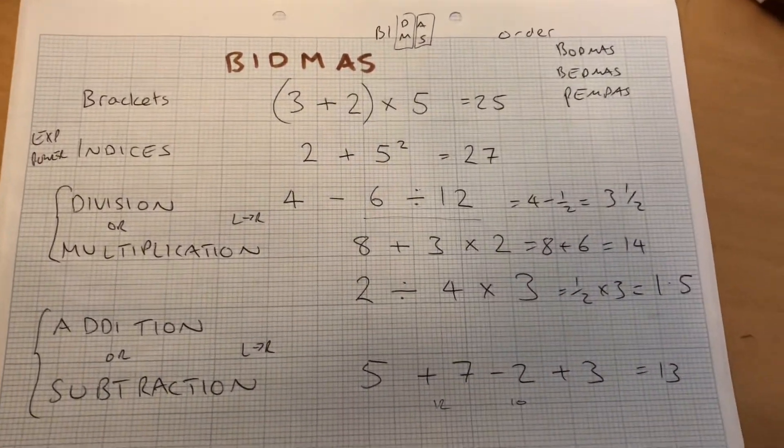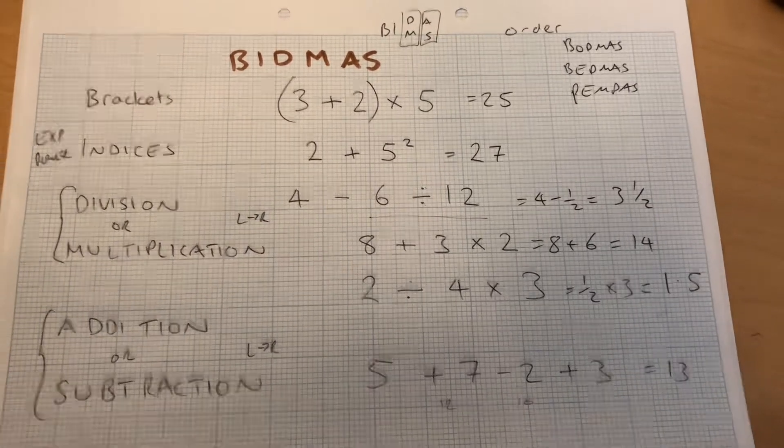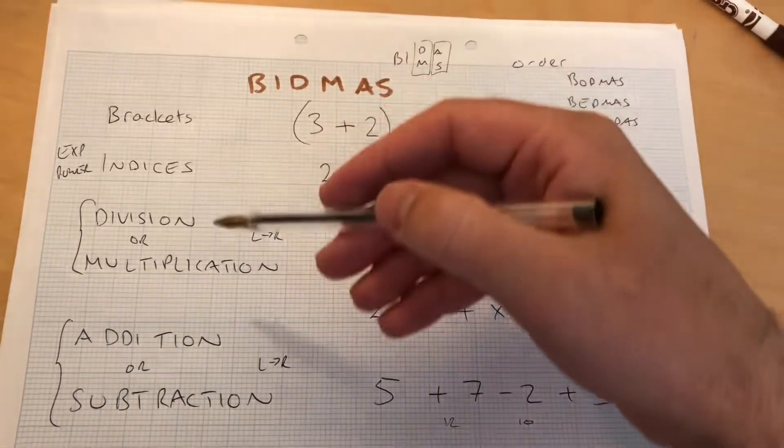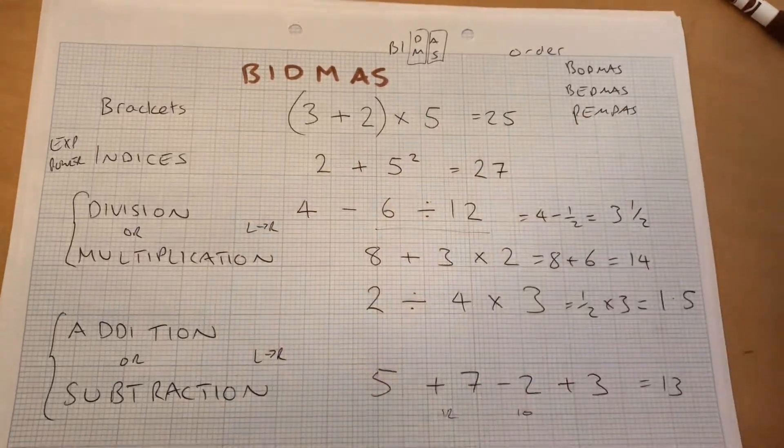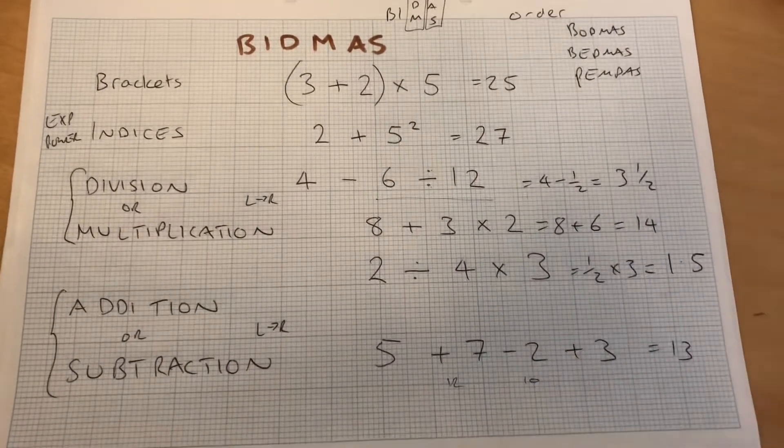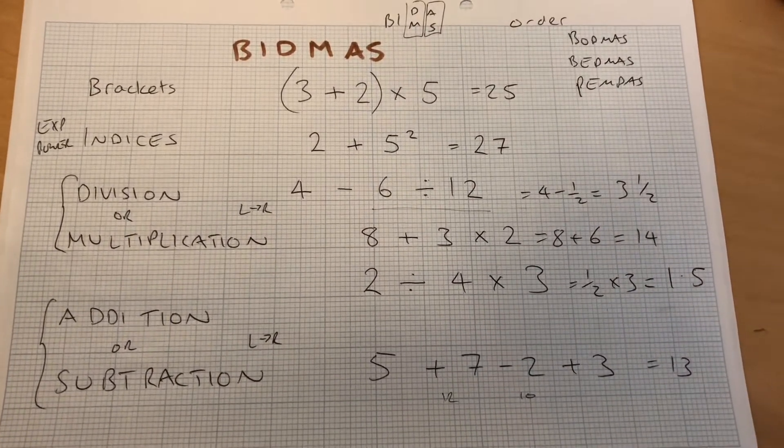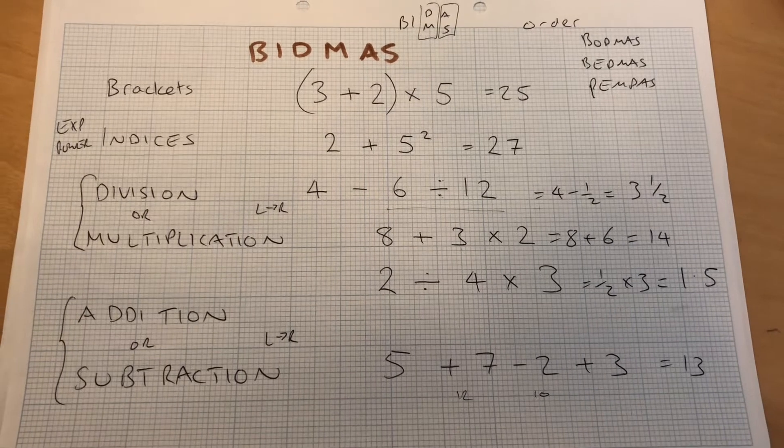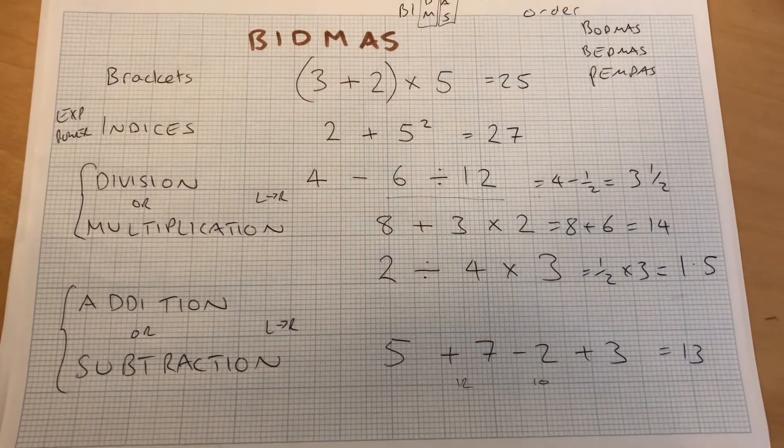So there we go. That's just a quick demonstration of the order of operations: brackets, indices, division or multiplication, addition or subtraction. Thanks for watching. There are a couple of other videos on the channel going over this topic as well. Don't forget to like, subscribe and share. See you next time.